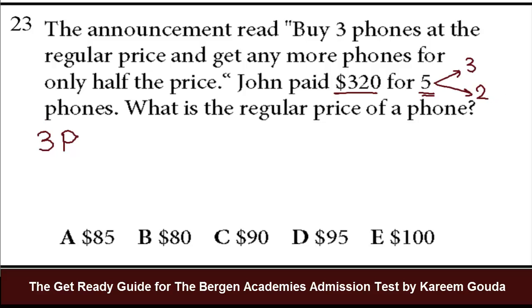So three times P, which is the regular price, plus two phones times the regular price over two, half the regular price, equals $320. Now the two here can be simplified with the two here. They cancel out. So I'm left with 3P plus 1P, which is 4P equals $320. Therefore, P equals $320 divided by 4. 320 divided by 4 is 80. So the answer is $80.